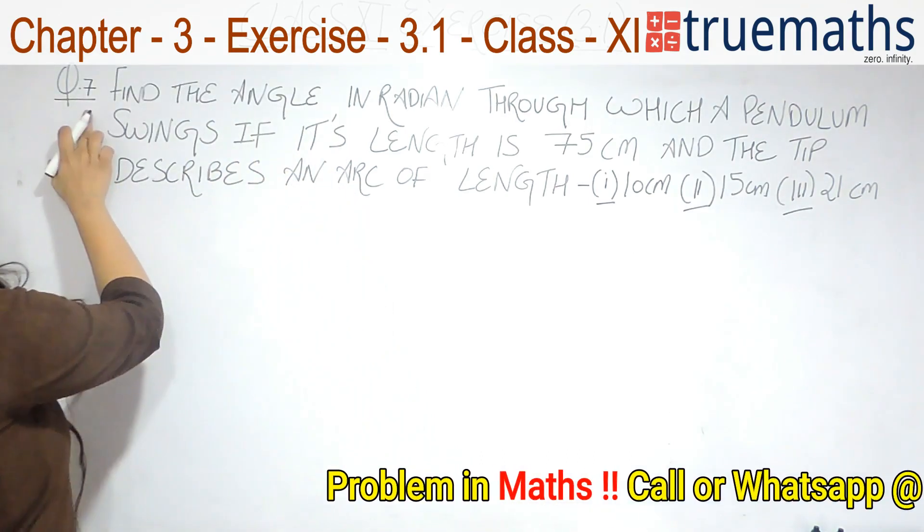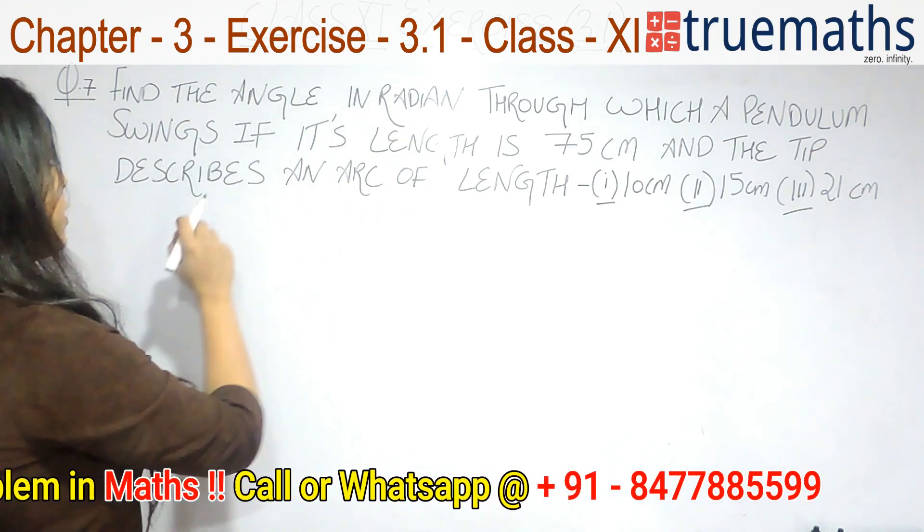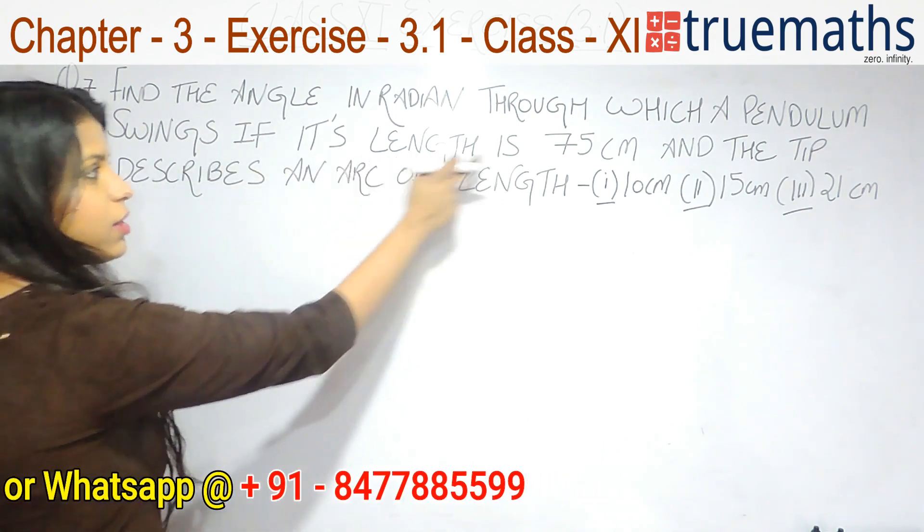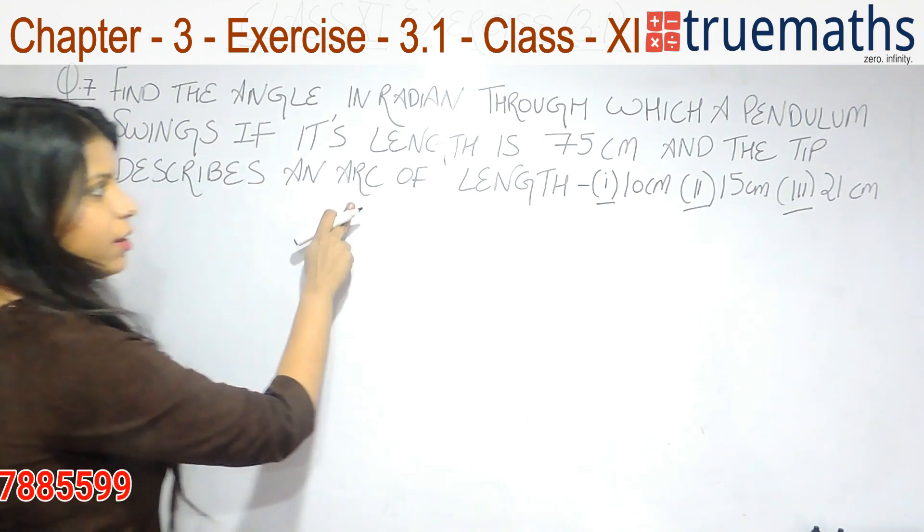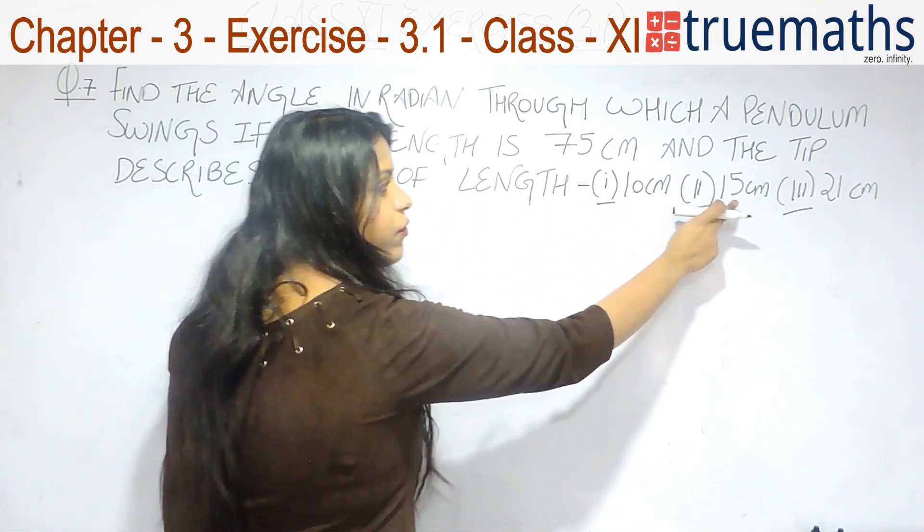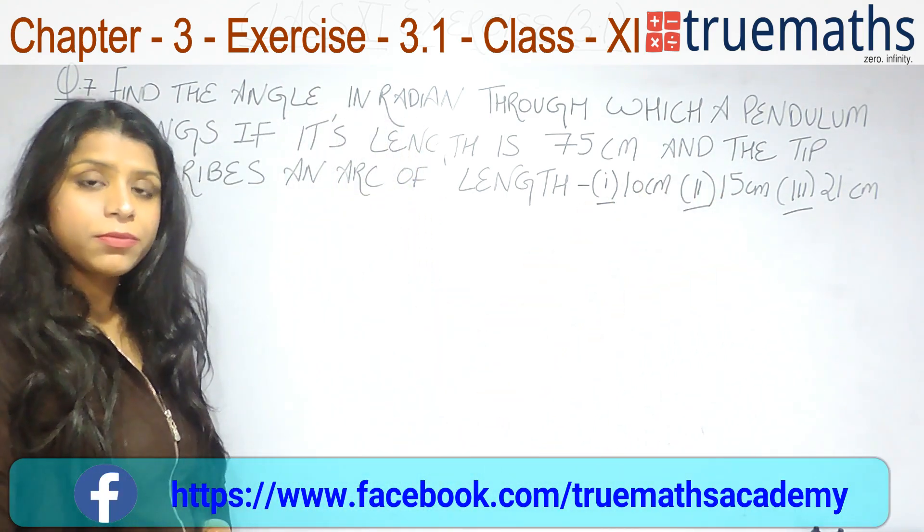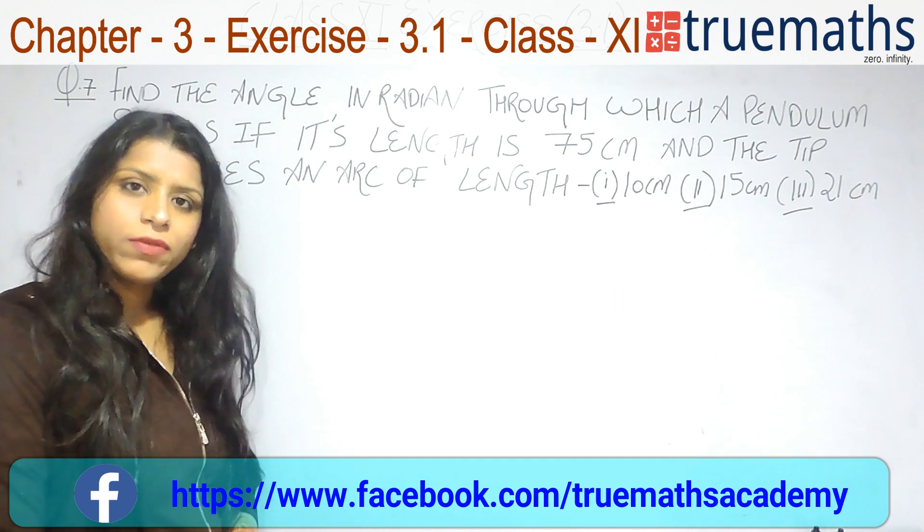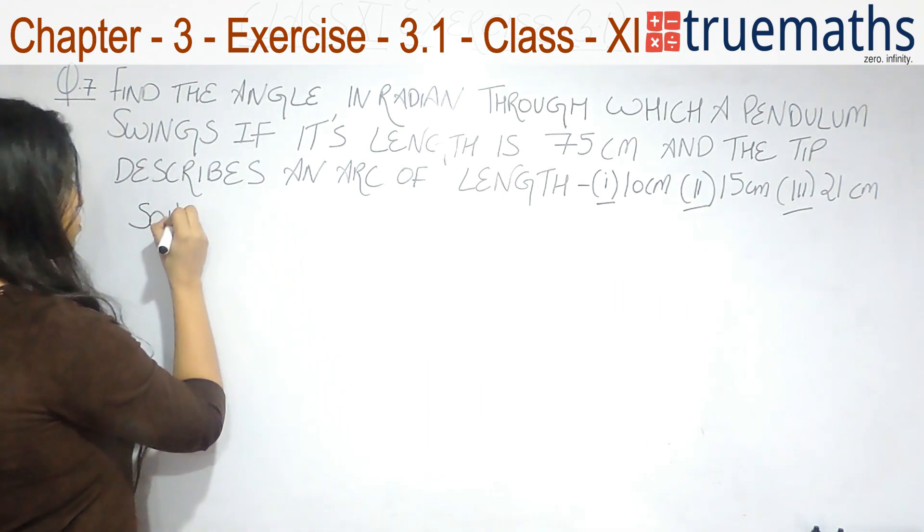The question says find the angle in radian through which a pendulum swings if its length is 75 cm and the tip describes an arc of length first 10 cm, second 15 cm and third 21 cm. So let's begin to solve this question.